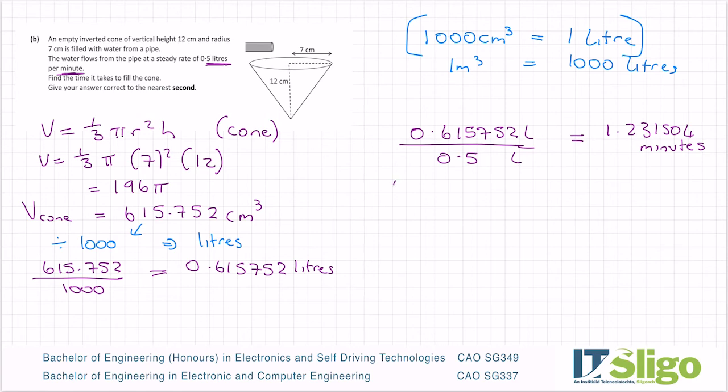However, give your answer correct to the nearest second. So I need to convert that to seconds. There's 60 seconds in one minute, so therefore I have to multiply my minutes by 60 to convert it to seconds, and I am getting 73.89024. It says to the nearest second, so that 89 is going to round up, so it's going to be 74 seconds. So it's going to take 74 seconds to fill that cone at a rate of 0.5 liters per minute.